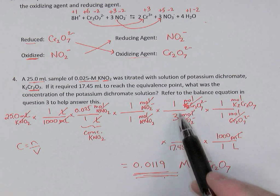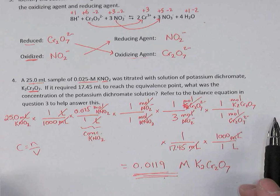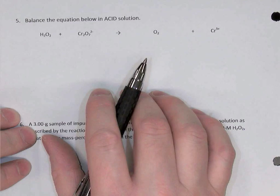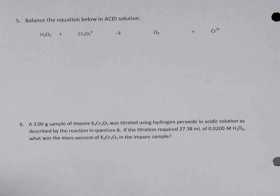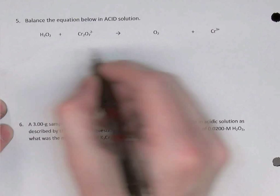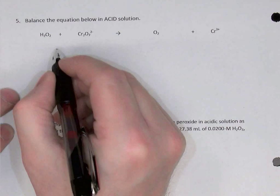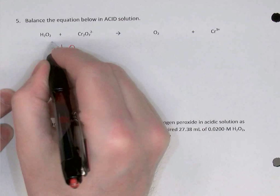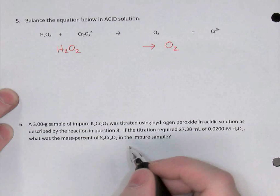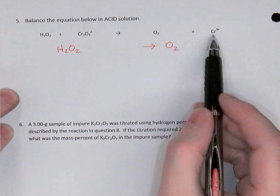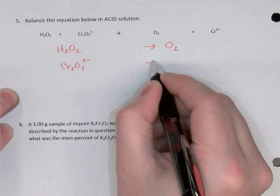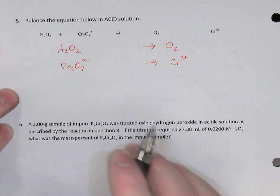Question five asks you to balance an equation in acid solution. Let's go through the steps. The first step is to split the original equation into two half-reactions. H2O2 becomes O2 — those go together. Dichromate becomes chromium-3. That pairing is because dichromate contains chromium and chromium-3 contains chromium.